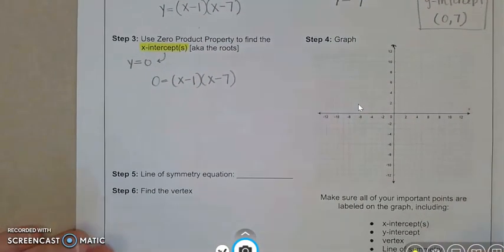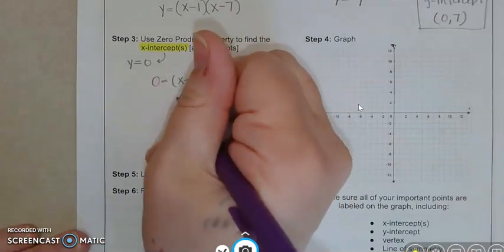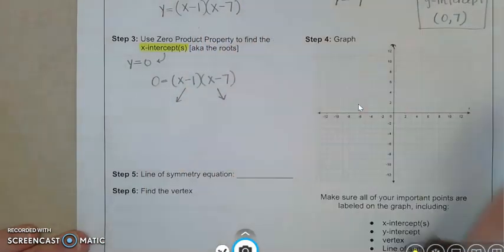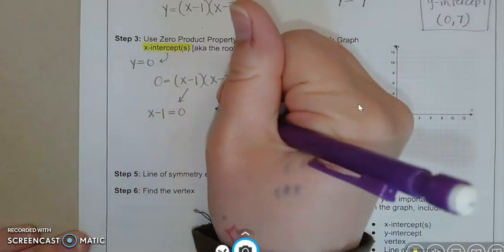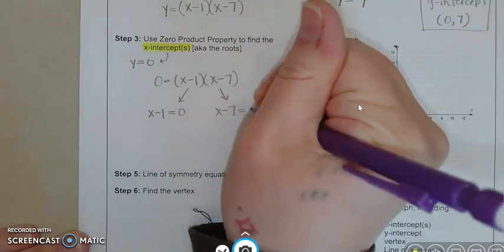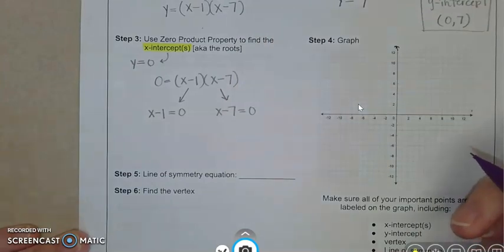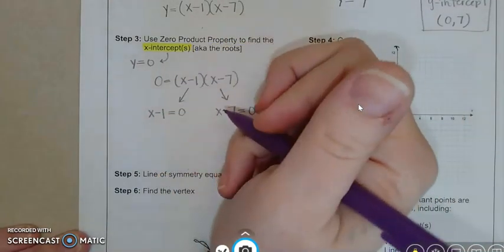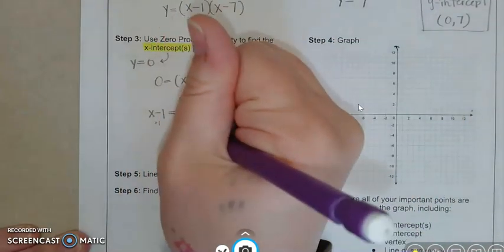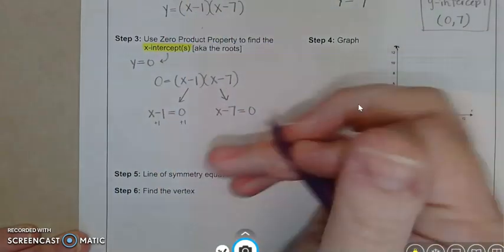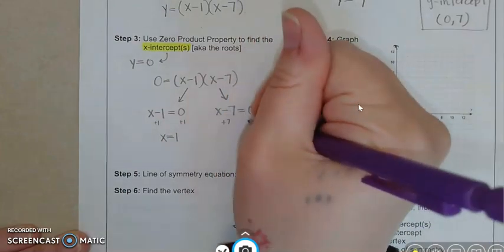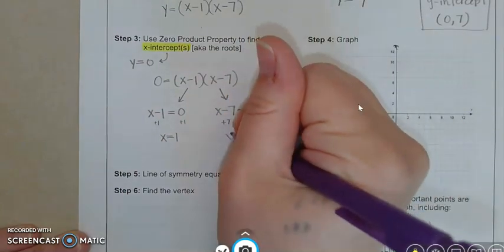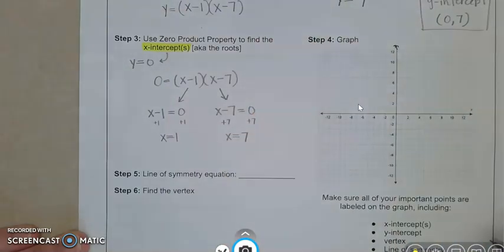Now the zero product property is something that we've studied. We are going to take each parentheses and we are going to create an equation. And we can solve. This one is going to be very simple. It's just a one step. All I got to do is add one on both sides, and so I get x equals one. And this one also is a one-step equation. We're just going to add seven on both sides.